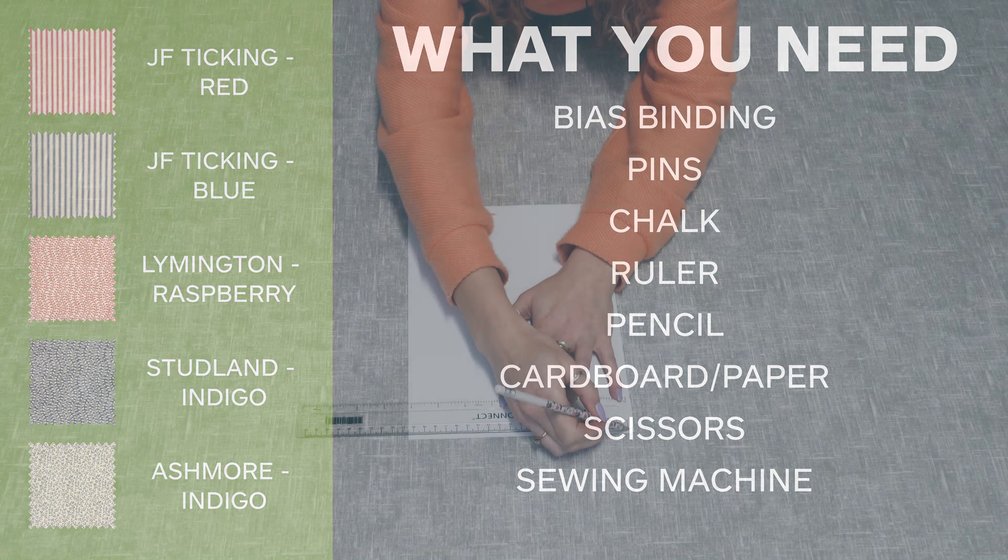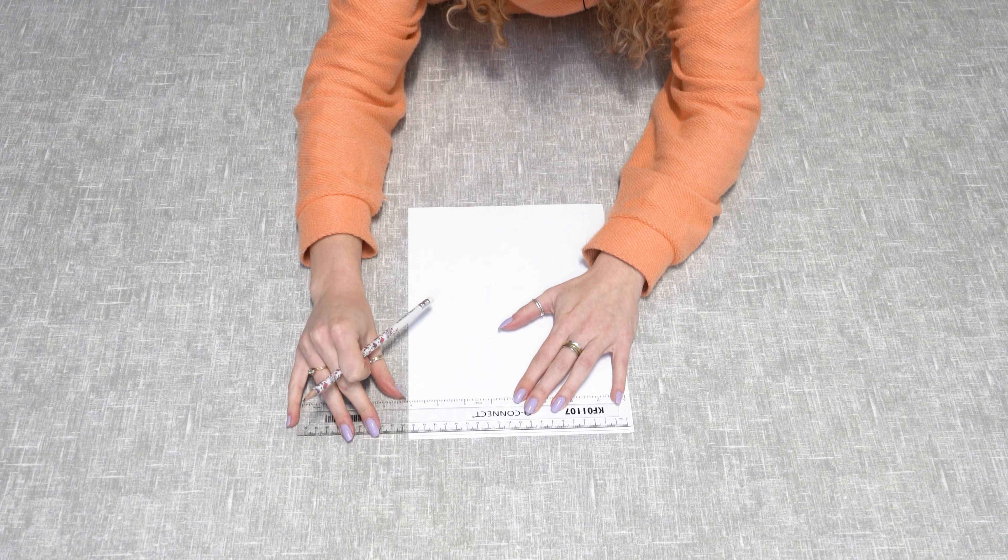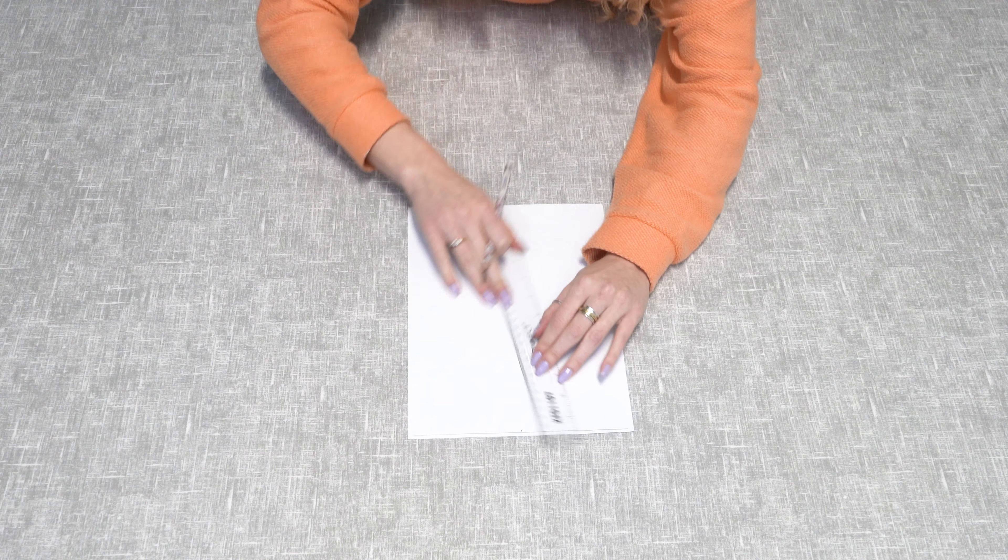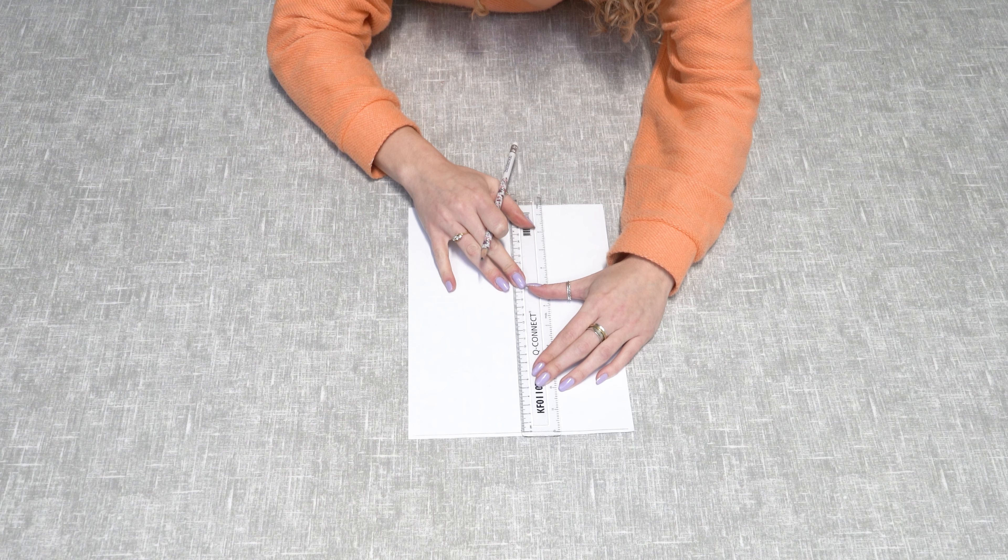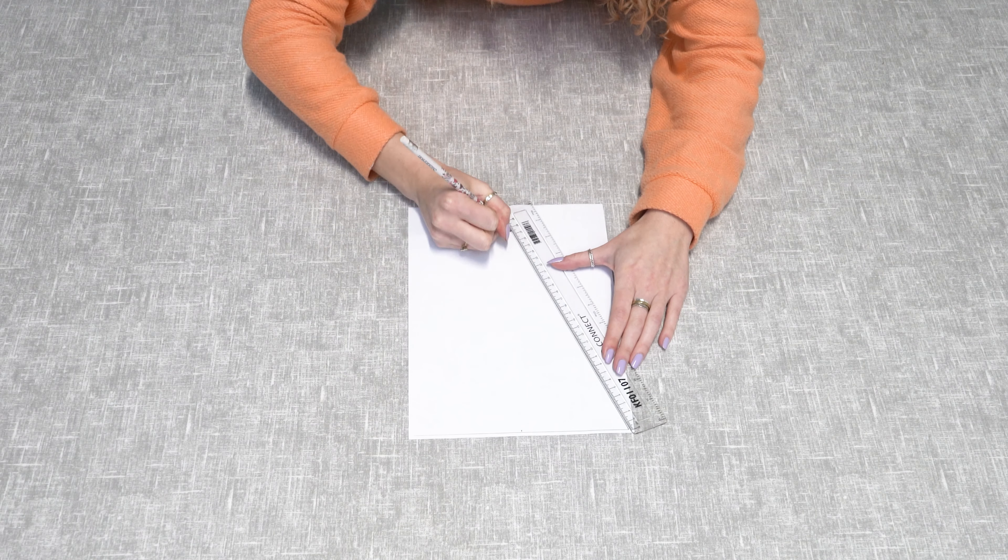So to make your stencil, we're going to do a triangle that is 20 centimeters wide across the top. Then if you measure across the line to halfway and then measure down to 26 centimeters, and then join up the sides to make the triangle.